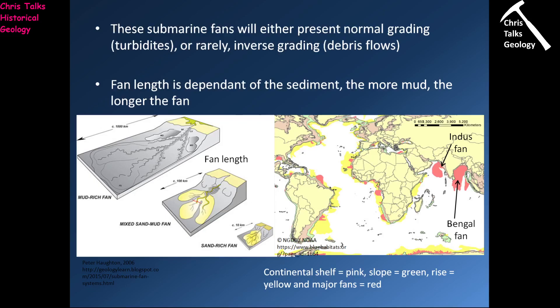Where you have underwater landslide deposits — debris flows — you can in some circumstances get inverse grading, meaning you would have the finest material at the bottom of the layer and the coarsest material at the top. But that doesn't happen all the time. In terms of the submarine fans themselves, the size of the fan will vary depending on how much mud there is in the sediment slumping down the continental slope. The more sand-rich your turbidity current is, the smaller your fan will be; the more mud-rich the material, the larger the fan will be.